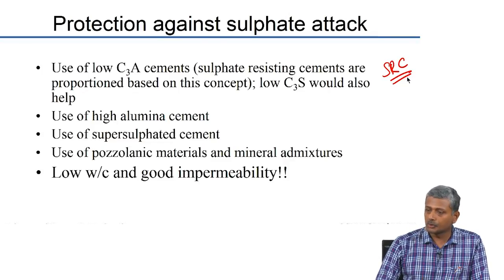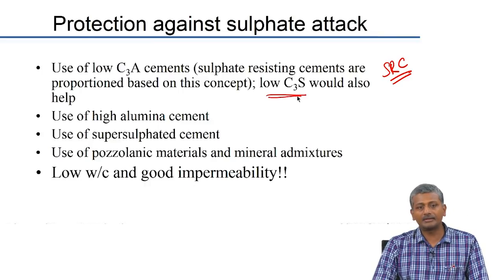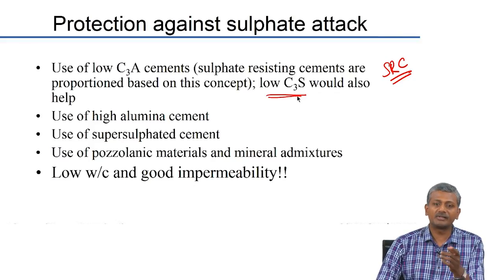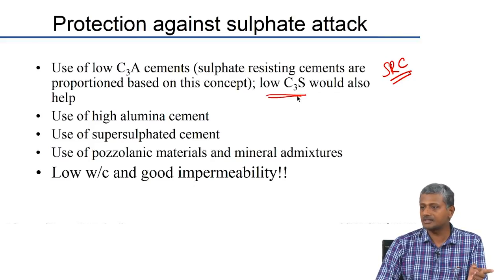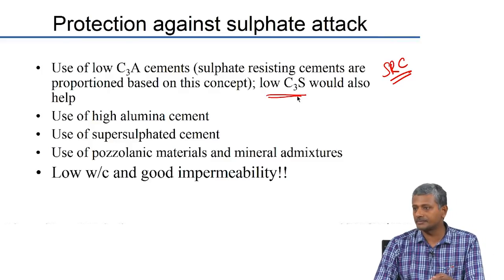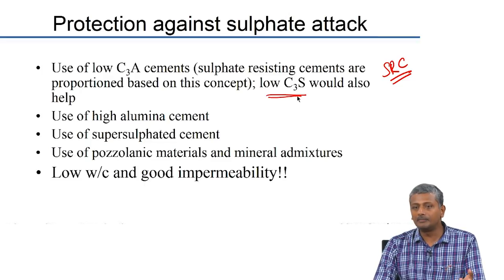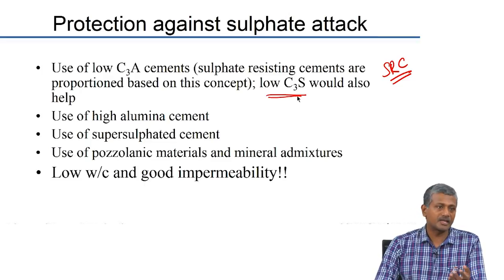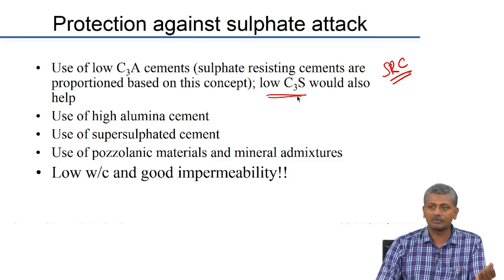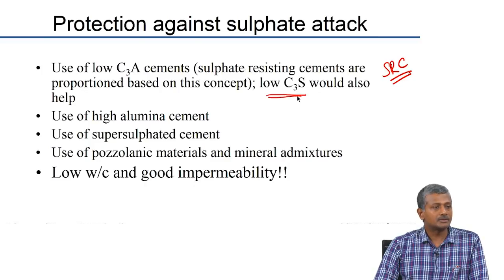It is also useful to have a cement low in C3S, from the point of view of production of calcium hydroxide upon hydration. One mole of C3S produces three times as much calcium hydroxide as compared to C2S. With more calcium hydroxide there is greater tendency to form gypsum, since external sulphates react with calcium hydroxide to form gypsum. Reduction in gypsum formation can also help improve the resistance of concrete or mortar to sulphate attack.